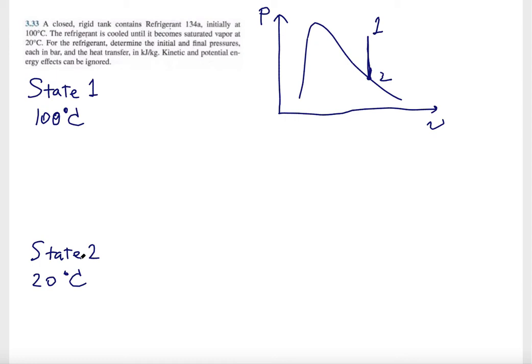About state 2, we know it's 20 degrees Celsius and it's a saturated vapor. That is sufficient information for us to get everything else about state 2. This is because of the state postulate. You need to know two independent intensive properties of a system to get all the other properties.